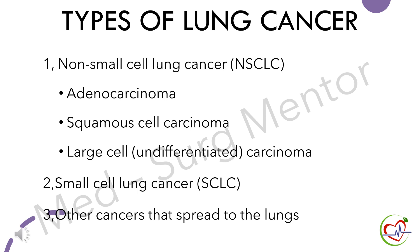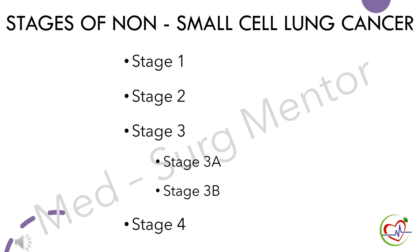Small cell lung cancer is also called oat cell carcinoma. The third type of lung cancer includes cancers that start in any other organs like the breast, pancreas, and kidneys, which can sometimes spread to the lungs.